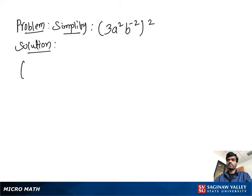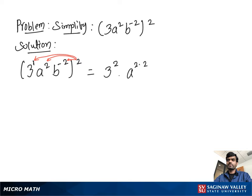Simplify 3a squared b to the negative 2, all to the second power. First, we multiply exponents using the power rule: we get 3a squared times a to the 2 times 2, b to the negative 2 times 2.